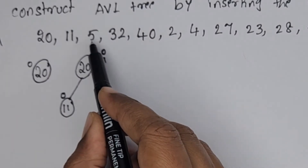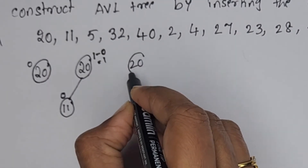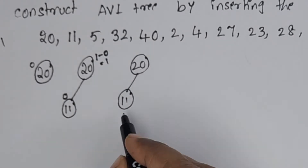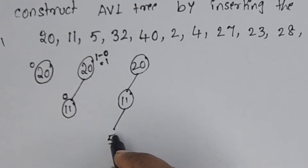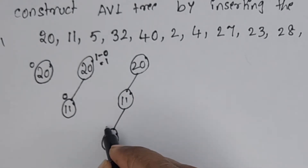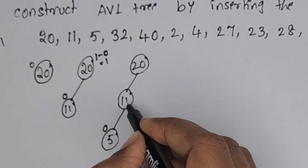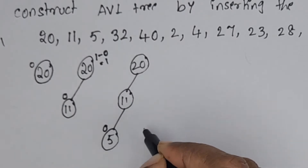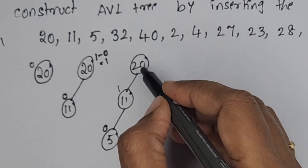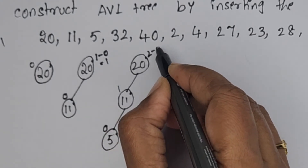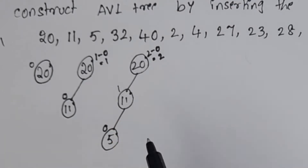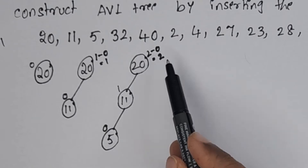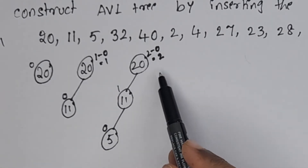Now insert the next element, which is 5. Since 5 is less than 20 and less than 11, it goes to the left of 11. Now we calculate balance factors: 5 has balance factor 0; 11 has left subtree height minus right subtree height = 1 minus 0 = 1; and 20 has left subtree height 2 minus right subtree height 0 = 2. Since 20's balance factor is 2, which is outside the allowed range, the tree is unbalanced.